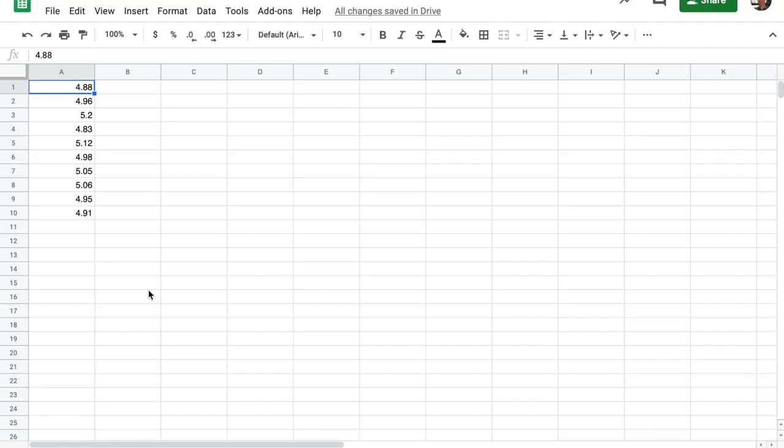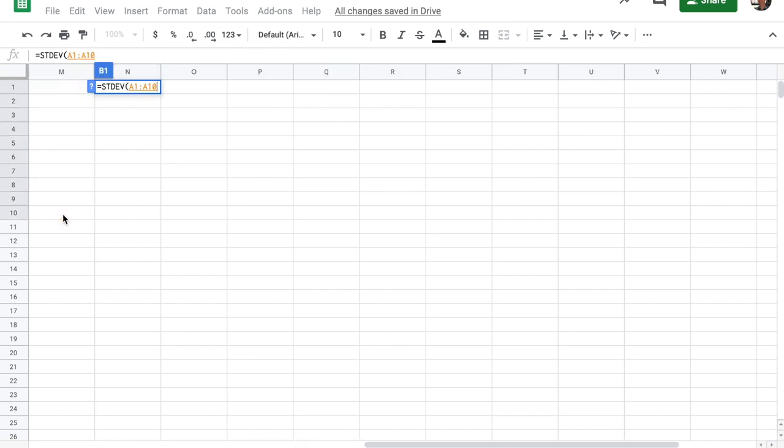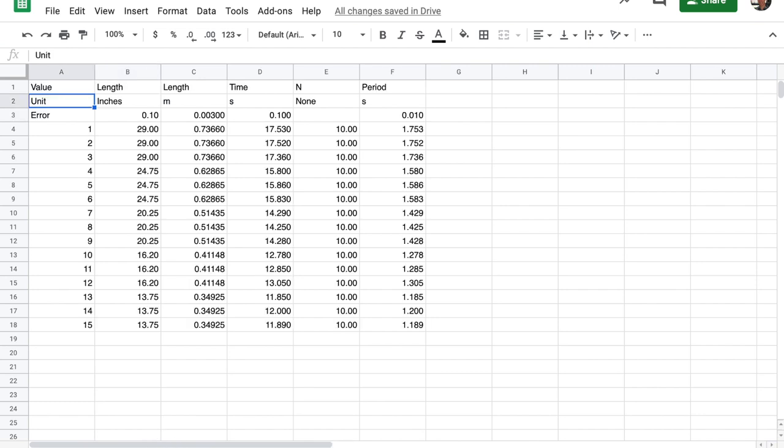The first part of the analysis is to calculate the timing error. These are 10 trials of me trying to measure five seconds exactly on the stopwatch and failing. What I'll do is I'll use the standard deviation function to define my errors. And I'll just type equals stdev open bracket. And I'll select the 10 data points and hit return. That gives me my timing error 0.11, etc. seconds, or to one significant figure. That's a timing error of 0.1 seconds. I'll use that in my actual data.